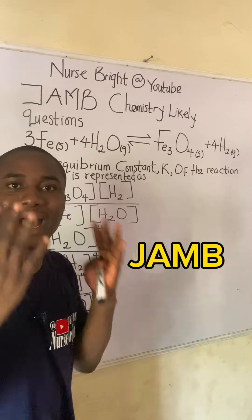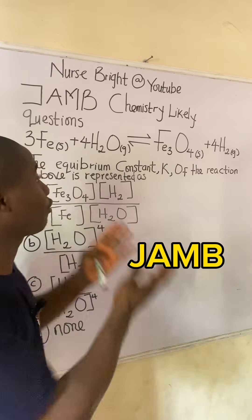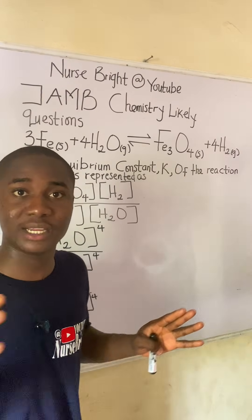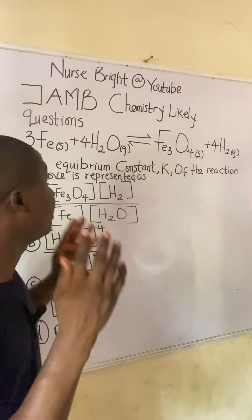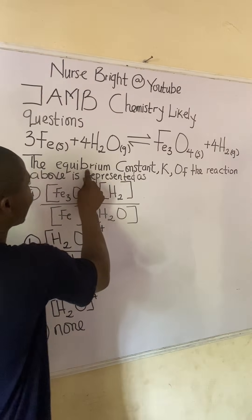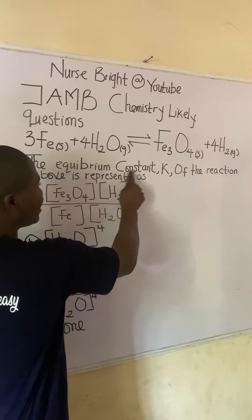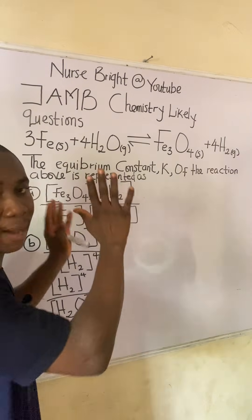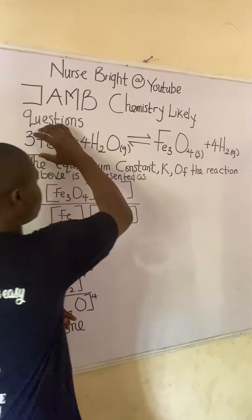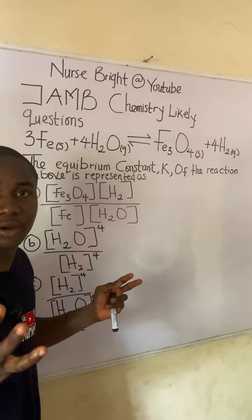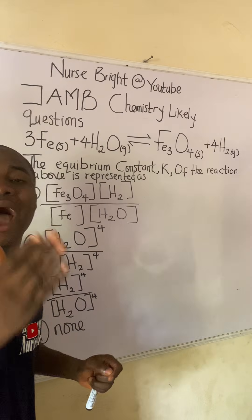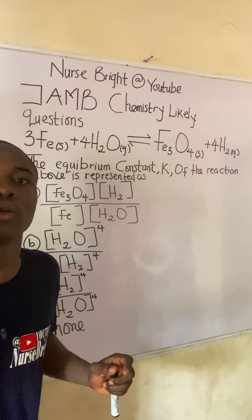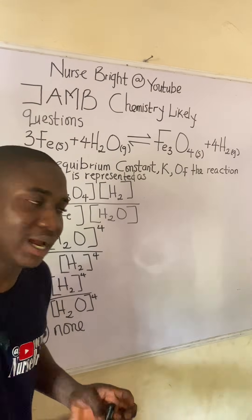You are writing the JAM exam and you came across this question — how will you solve it? It is very easy. Now let's solve together. The question says the equilibrium constant K of the reaction above. So how do we write the equilibrium constant expression for a particular reaction?